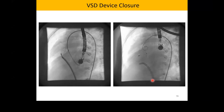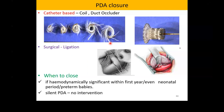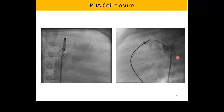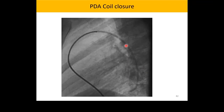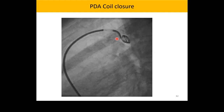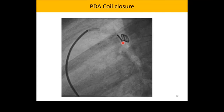Patent ductus arteriosus (PDA) is a connection between the aorta and the pulmonary artery. Majority can be closed in the cath lab — coils for smaller defects and devices for larger PDAs. If the children are very small or preterm, surgically the surgeon locates and clips it off. When hemodynamically significant, even in the neonatal period it needs to be closed, because the pulmonary arteries are exposed to high pressure and can develop early pulmonary hypertension.